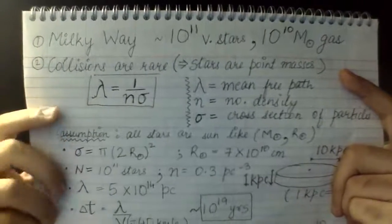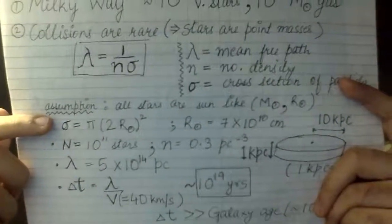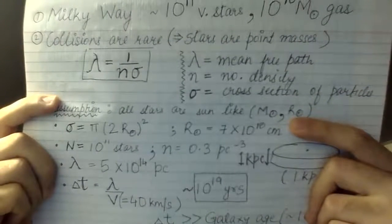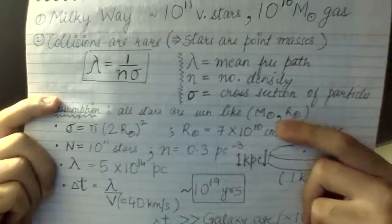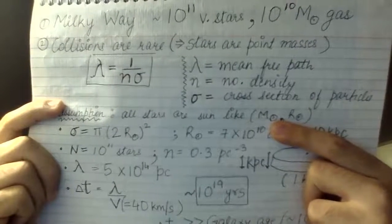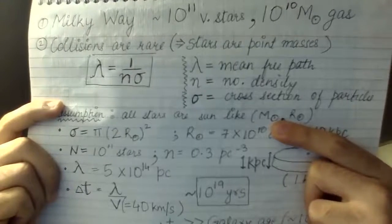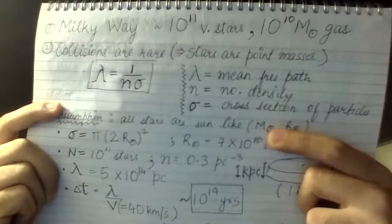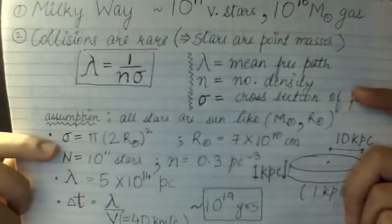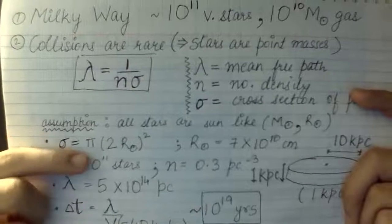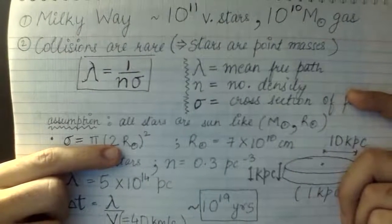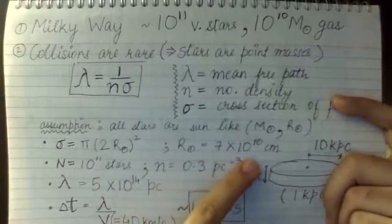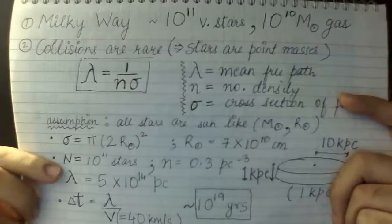Consider our own galaxy and assume all stars resemble our Sun — each has radius R-dot (the solar radius) and mass M-dot (the solar mass). With 10 to the power 11 such stars, we can calculate the cross-section using pi times R-dot squared, where R-dot is 7 times 10 to the power 10 centimeters.